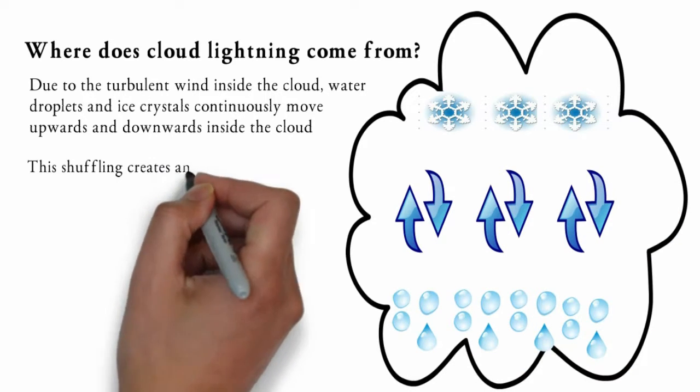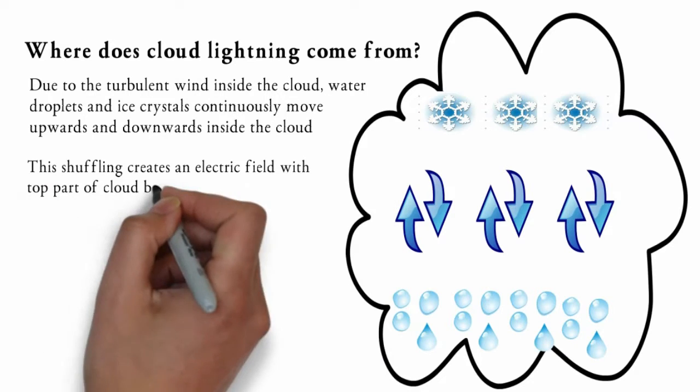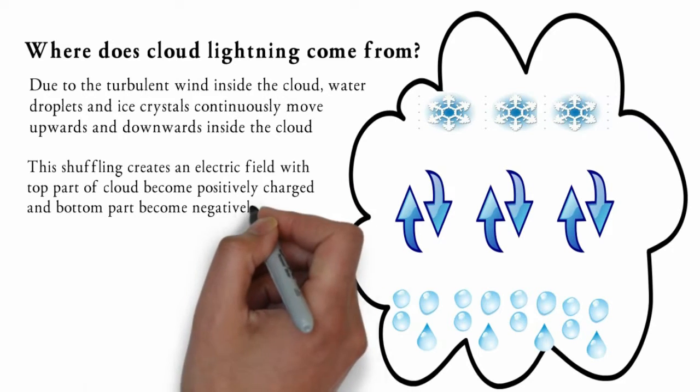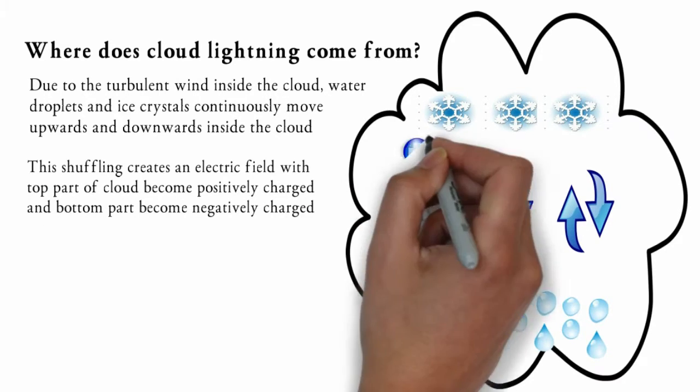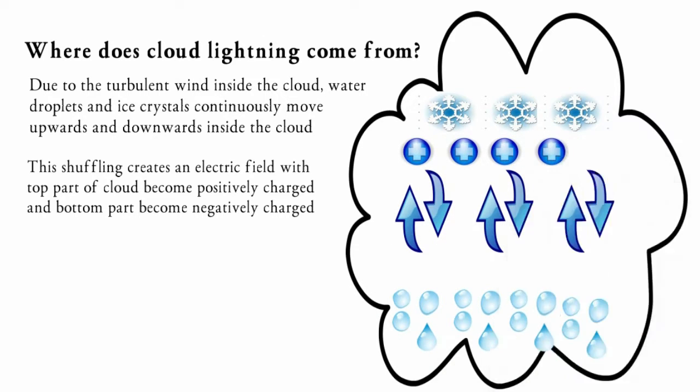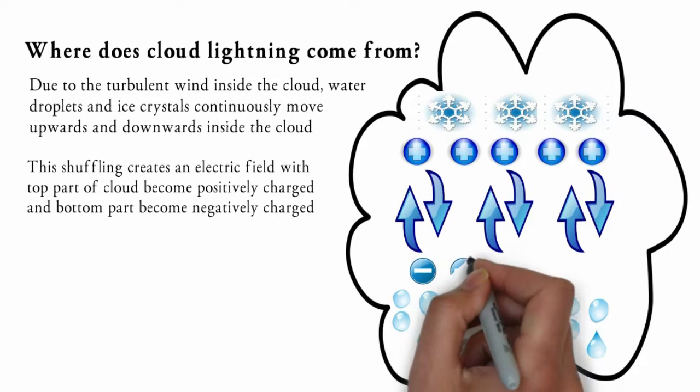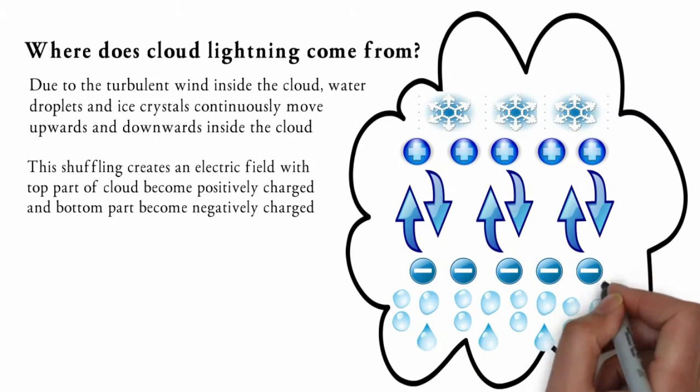Due to this continuous shuffling and interaction of water droplets and ice crystals, an electric charge develops in the cloud. The top part of the cloud becomes positively charged, whereas the bottom part becomes negatively charged.